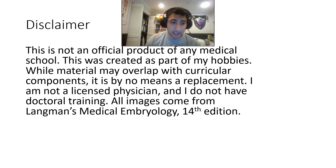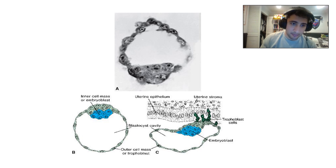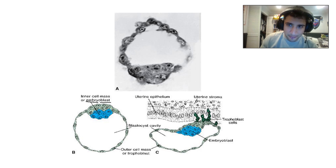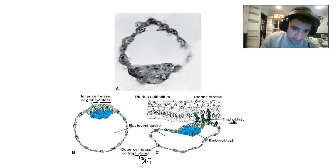There are a few things I want to point out before we get started. 'Blasts' are cells that give rise to something. So the embryoblast is made by cells that give rise to the embryo. The trophoblast is composed of cells that give rise to feeding — 'tropho' — and those are going to become the villi. So trophoblasts give rise to the villi, and embryoblasts give rise to the embryo.